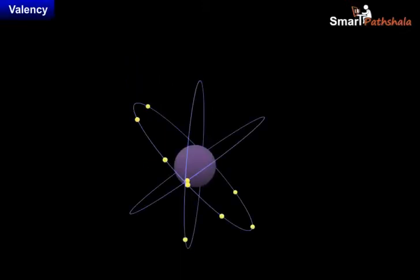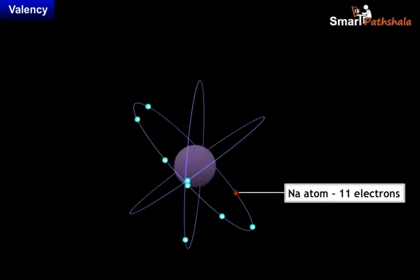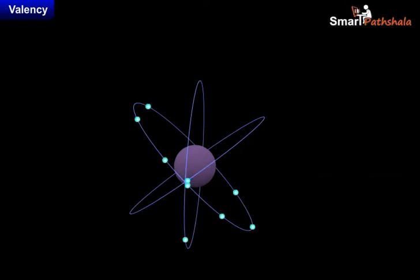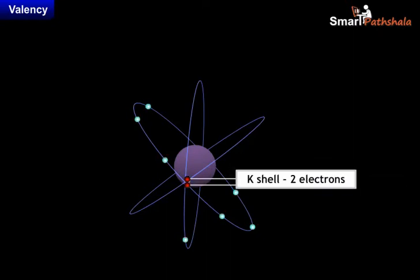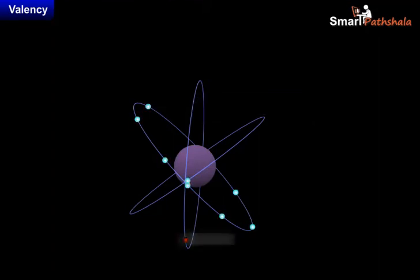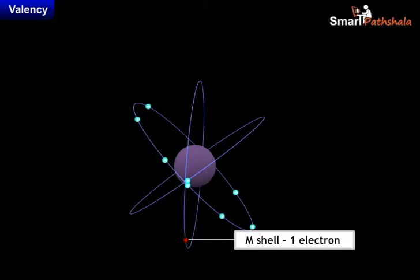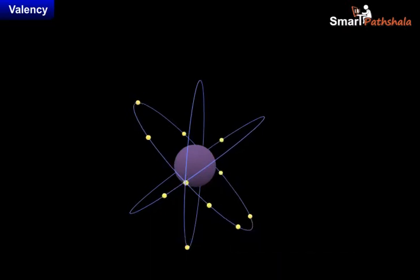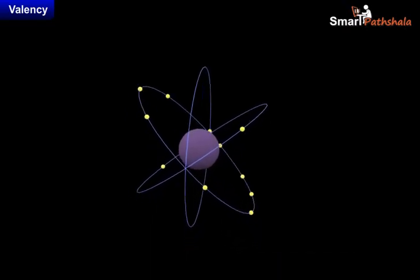Similarly, a sodium atom has 11 electrons. 2 electrons are filled in the K shell, 8 electrons are filled in the L shell, and the last 1 electron is filled in the M shell. This last electron is known as a valence electron. According to the Bohr-Bury scheme...